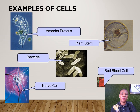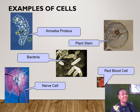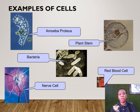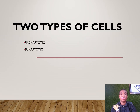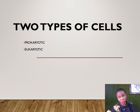Some examples of cells include the amoeba, bacteria cells, nerve cells that conduct nervous impulses to your brain, red blood cells, and plant cells. Cells can be of many types, but there are two major types: prokaryotic and eukaryotic.